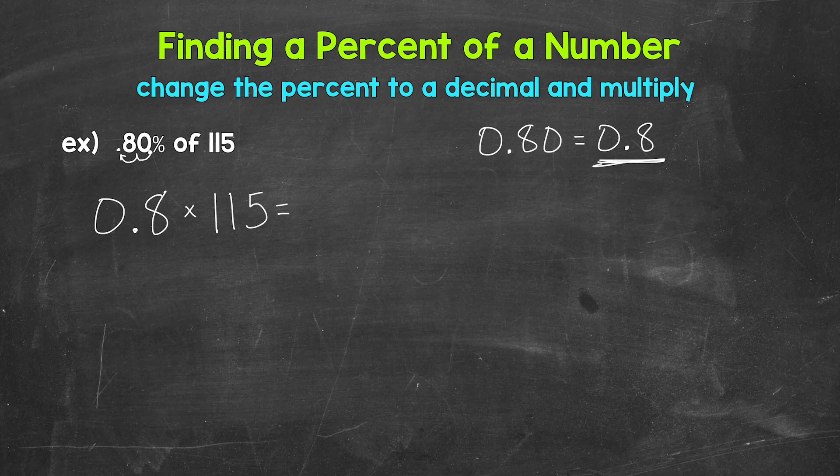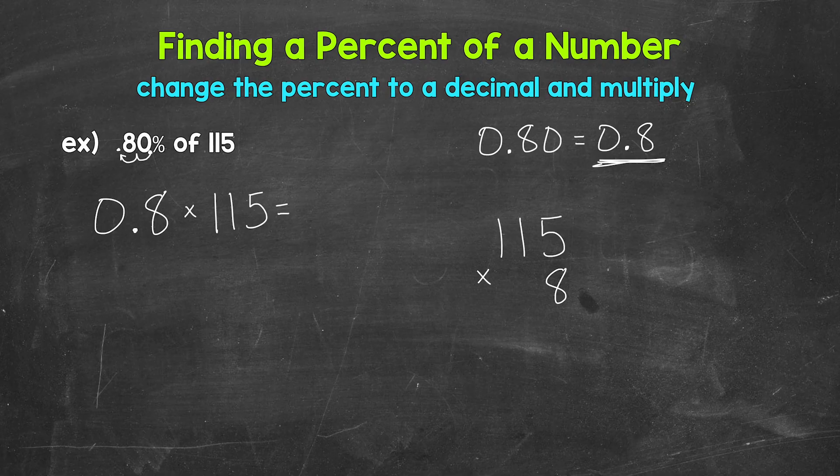And remember, when we multiply decimals, we can take any decimals out and then place the decimal into our answer at the end. So we can do 8 times 115 here. But I'm going to put the larger number 115 on top. So let's do 115 times 8.